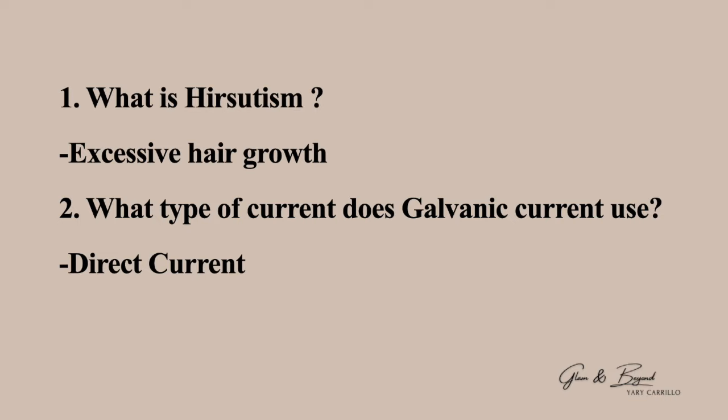Number one: what is hirsutism? Hirsutism is excessive hair growth. Number two: what type of current does galvanic current use? It uses direct current.